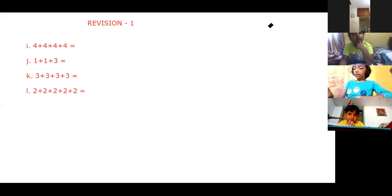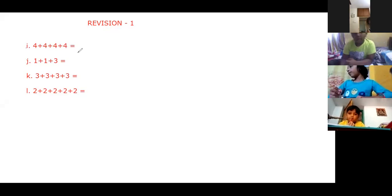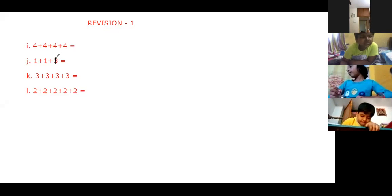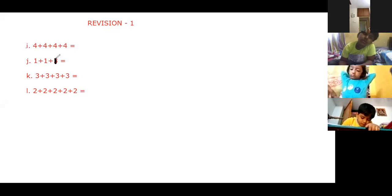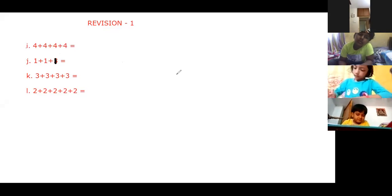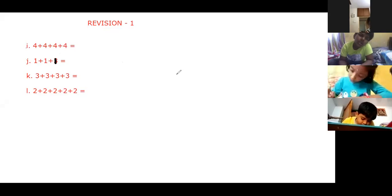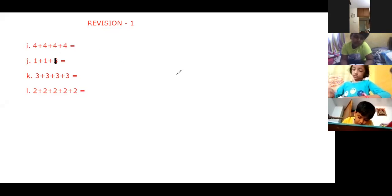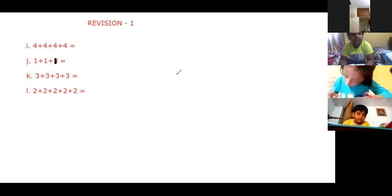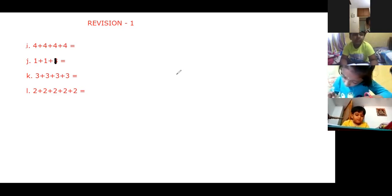Children, in bit J, it is one plus one plus one — not three. I'll correct it. Actually, I had to write this one three times — by mistake I wrote three. So this is one plus one plus one in bit J. Please make this correction. By mistake I wrote one plus one plus three — I'm sorry for that.